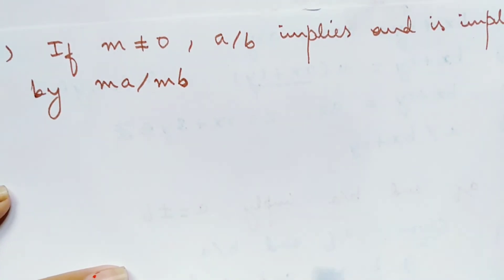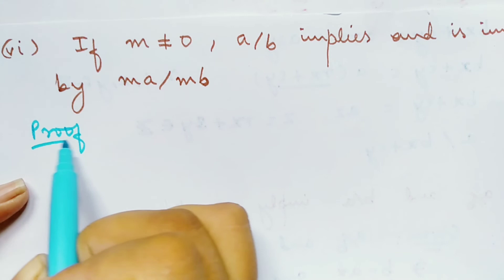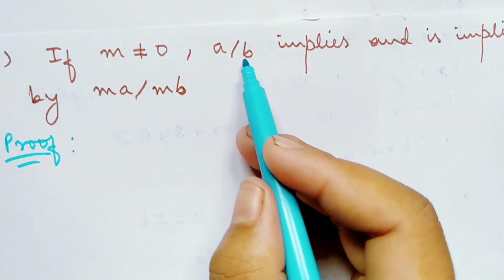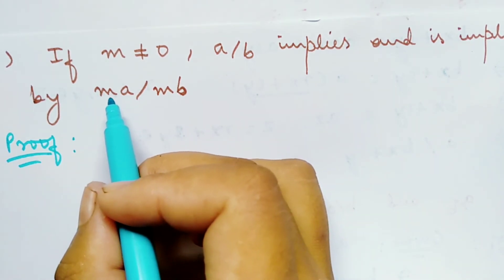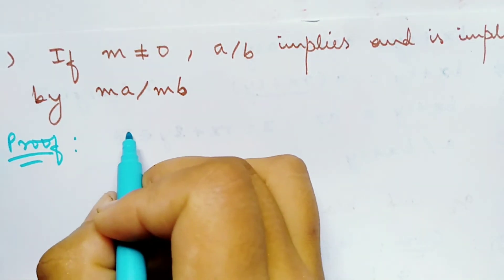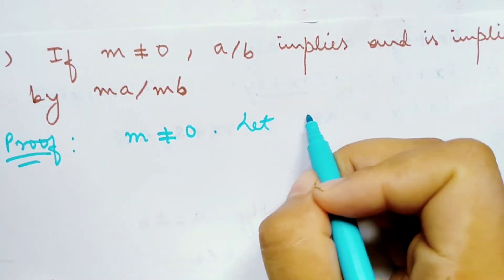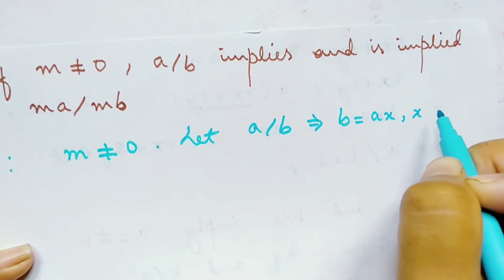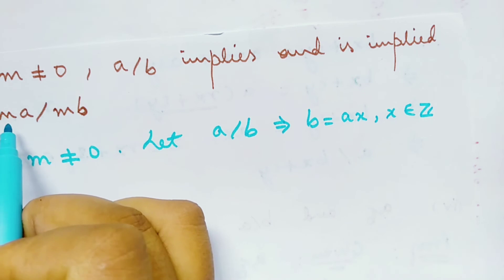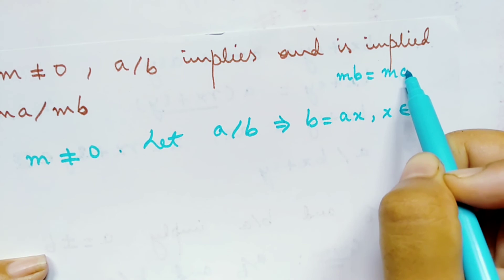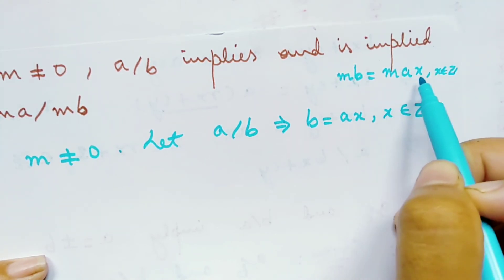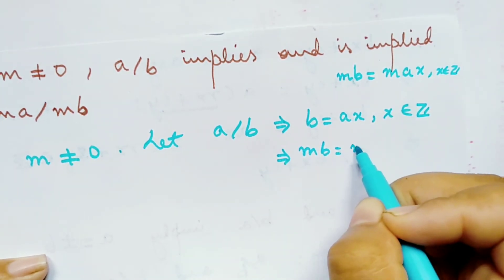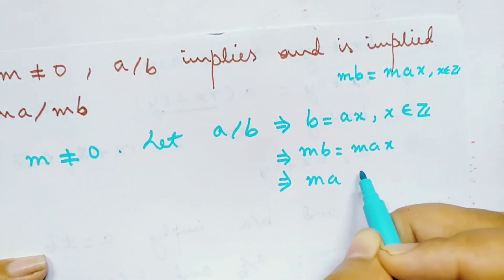The sixth theorem: if m is not equal to 0, then a divides b if and only if ma divides mb. We prove both directions. First, assuming a divides b, we prove that ma divides mb. Since a divides b, we write b as a times x. Multiplying both sides by m, we get mb equals ma times x, so it implies that ma divides mb.